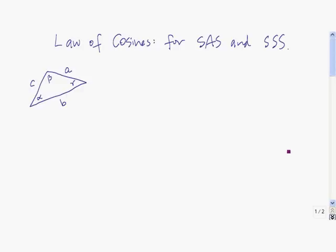The law of cosines is used to solve triangles where we know two sides and their included angle, or if we know all three sides.